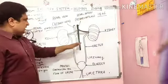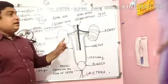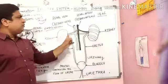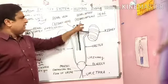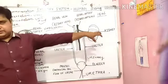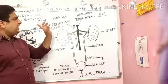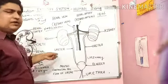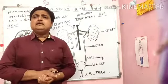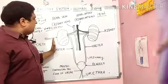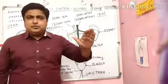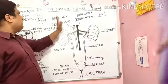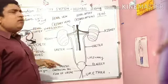The renal artery carries impure blood — that is, blood mixed with urea — to both kidneys. Filtration occurs in the kidney, and after filtration the blood becomes pure, meaning it is without urea. This purified blood is then transported to different body parts by the renal vein, which is also connected to both kidneys.